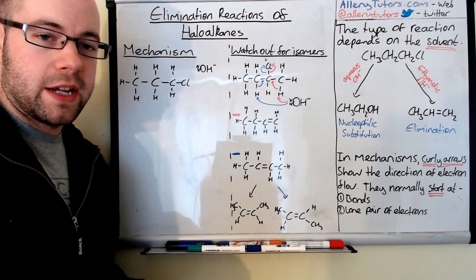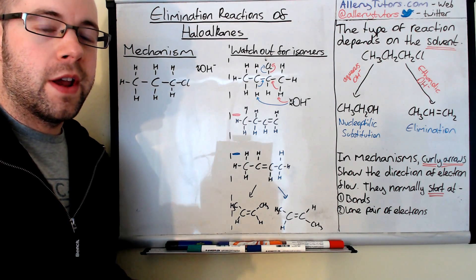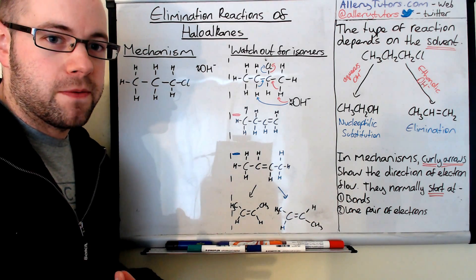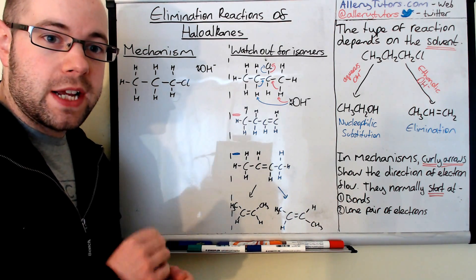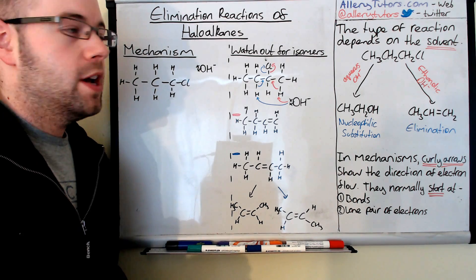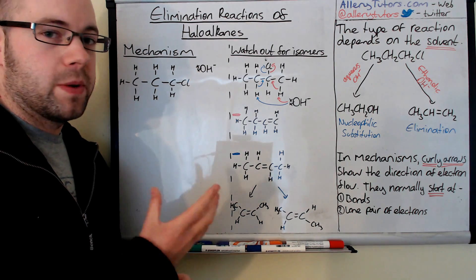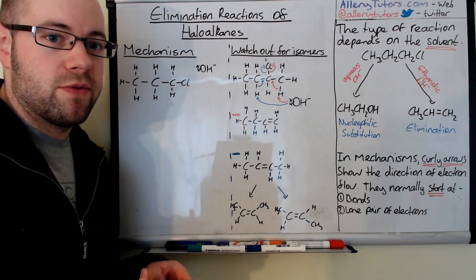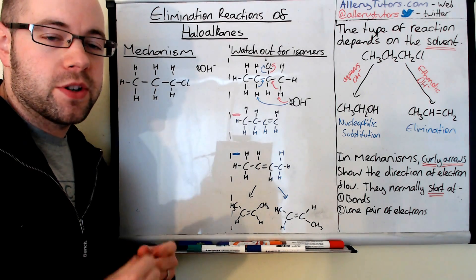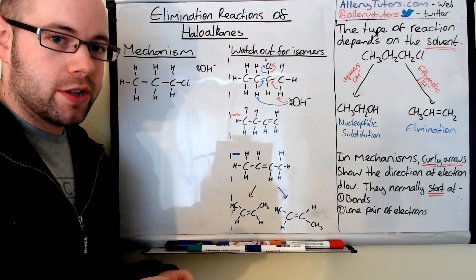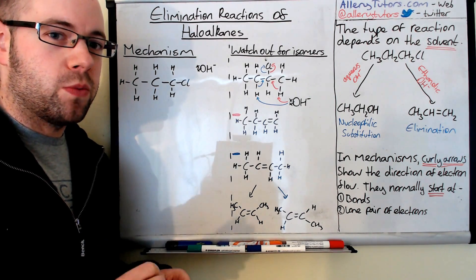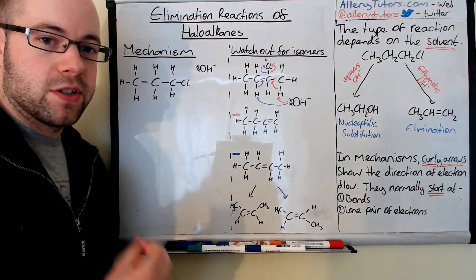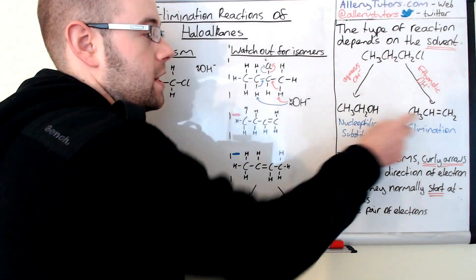There is a video that looks into the mechanisms of nucleophilic substitution with hydroxide ions — if you're not sure on that mechanism, click the link below. But if we take sodium hydroxide and dissolve it in ethanol — an alcoholic solution — then we get a different reaction: an elimination reaction, which produces an alkene. In the exam, look at the question and check what the hydroxide is dissolved in. If it's dissolved in water, you get nucleophilic substitution; if it's dissolved in ethanol, you get an elimination reaction.